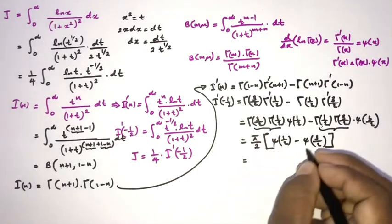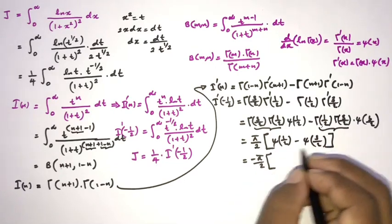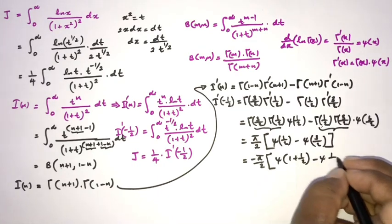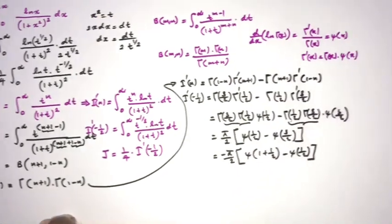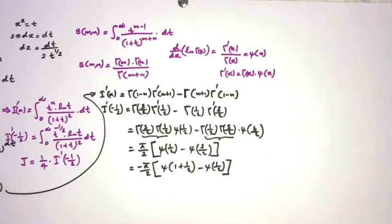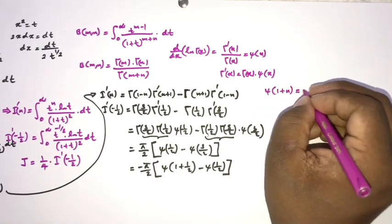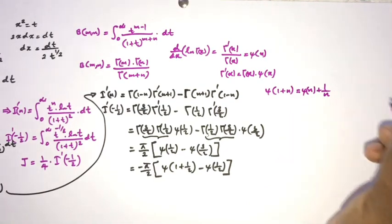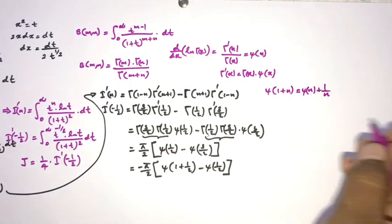Taking minus as a factor: I'(-1/2) equals minus pi/2 times (digamma(3/2) minus digamma(1/2)). We use the digamma recurrence relation: digamma(1+n) equals digamma(n) plus 1/n. Let me prove this: from Gamma(n+1) equals n·Gamma(n), differentiating gives Gamma'(n+1) equals n·Gamma'(n) plus Gamma(n).